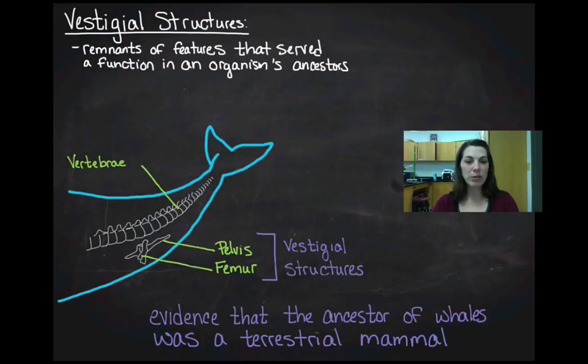If that leg were sticking out and creating drag on the whale, making it swim slower and more susceptible to predators or less likely to get its food, then you would have selection against that structure. But in the case of this pelvis and femur that are inside the body, they're not affecting the whale's hydrodynamics, so you wouldn't expect to see those structures go away.